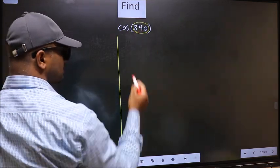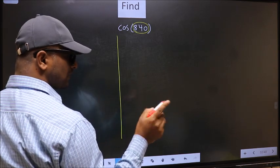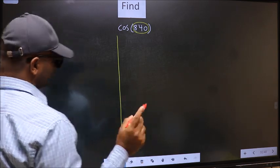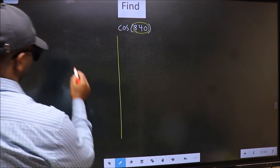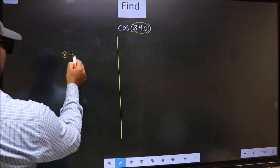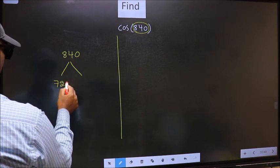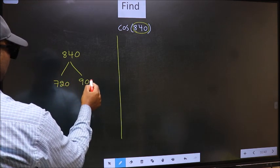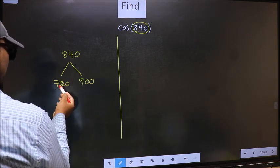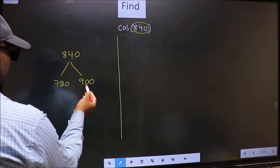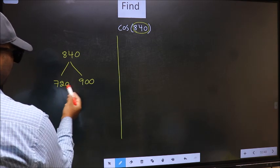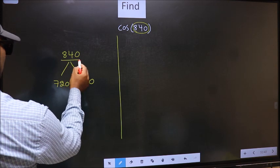840 lies between which two multiples of 180. What I mean is, 840 lies between 720 and 900. This is 180 into 4 and this is 180 into 5. Between these two numbers, 840 lies.